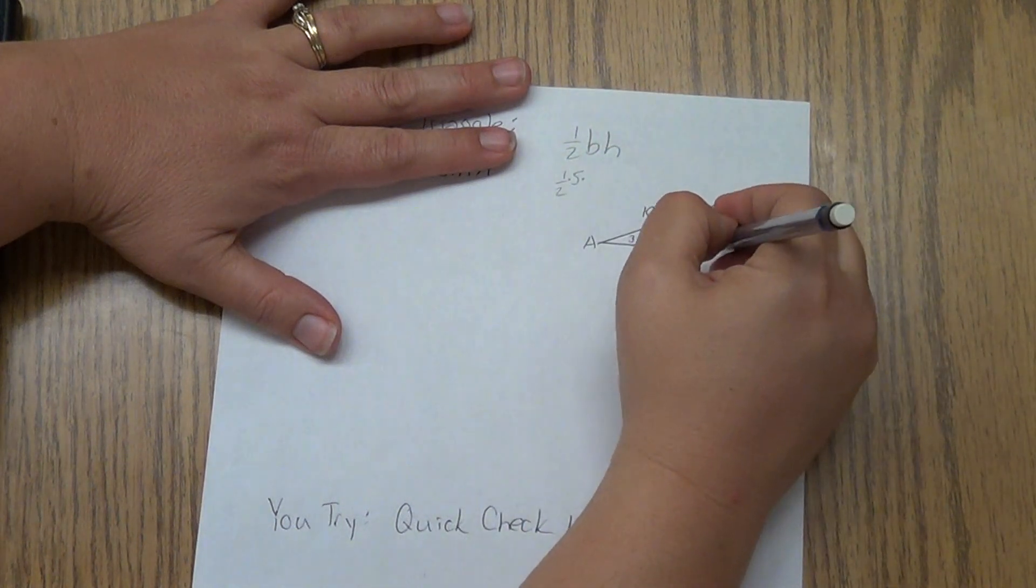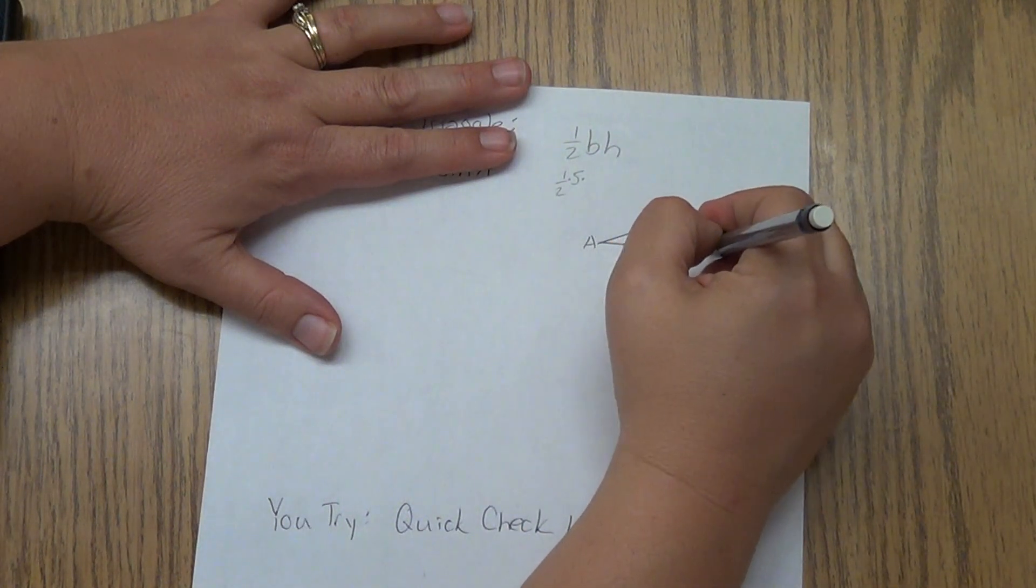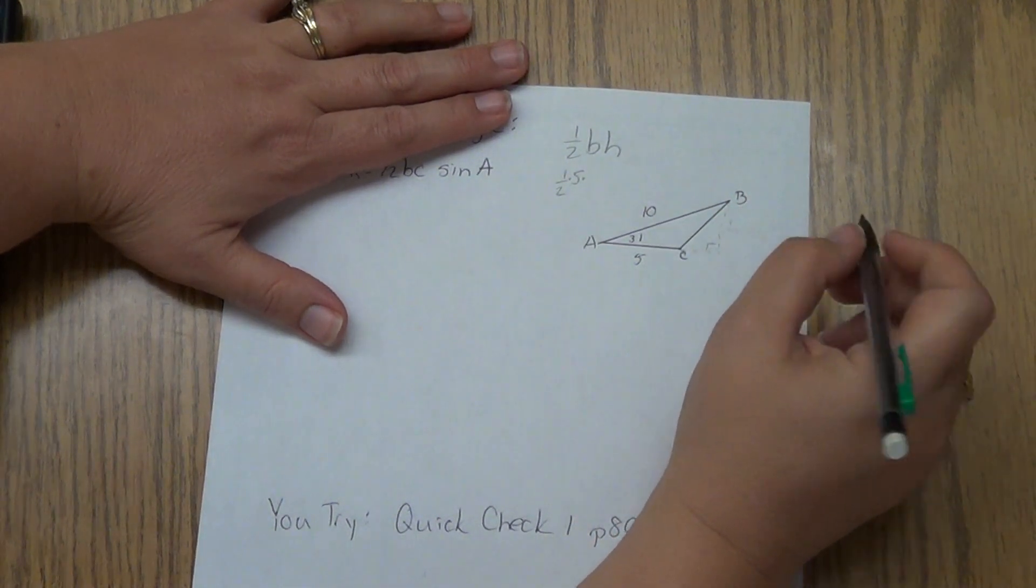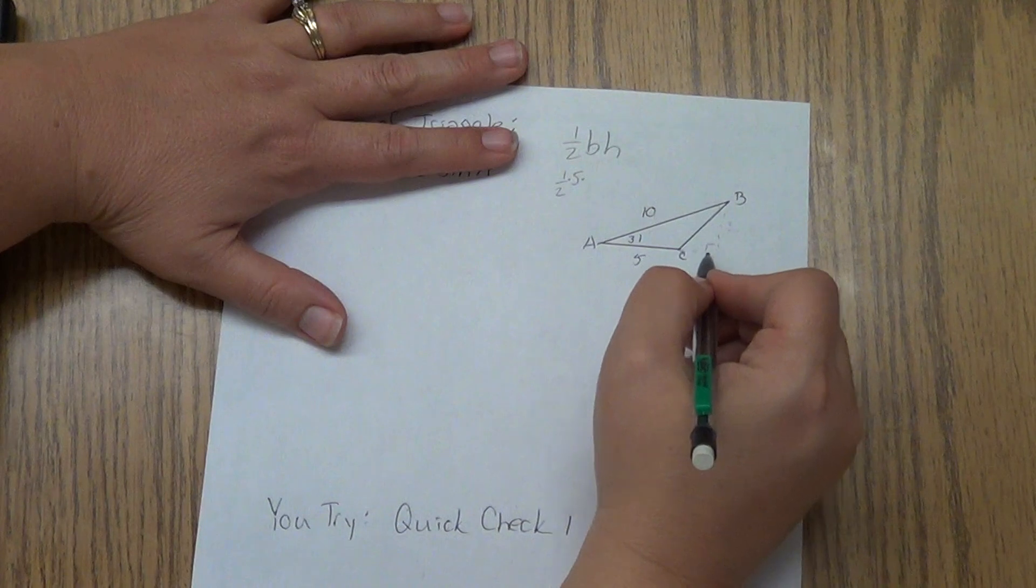But our height has to be perpendicular to our base. So we would have to draw that in and find this side. Well, look what happened. I created a right triangle.